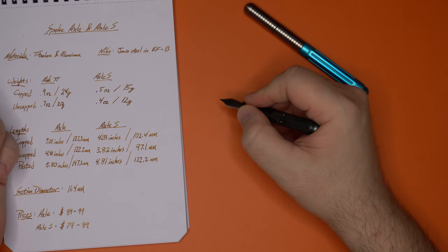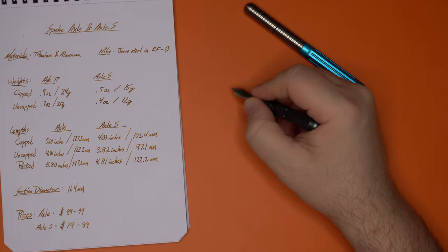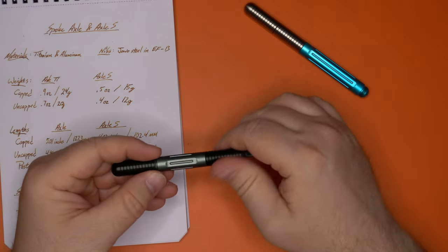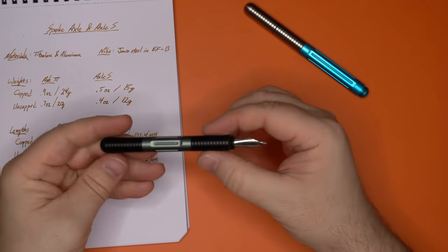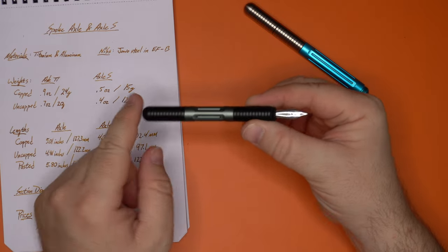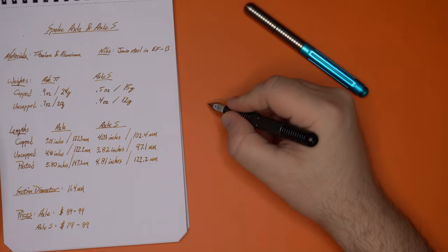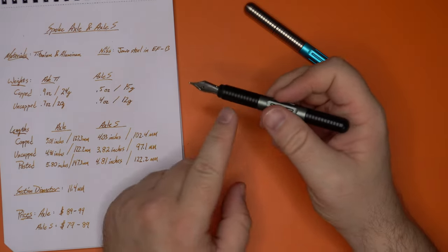It'll kind of settle right there in the web of my hand and it'll work pretty well. But for anything longer, I'm going to want to post this on the back, which I think makes it look really nice. You again get that good symmetry and it makes it much longer.